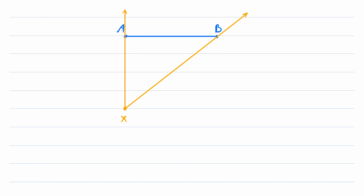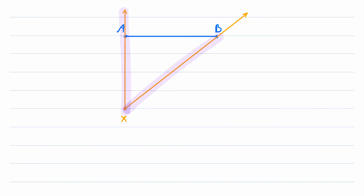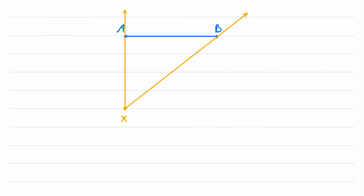More specifically, it's the angle subtended by the line segment AB from the vertex X, which means that its vertex is at the point X and its rays pass through the endpoints of the line segment AB. So that's an example of one subtended angle.